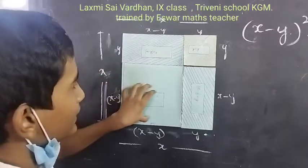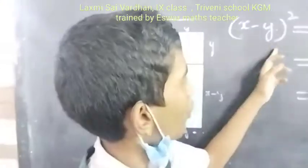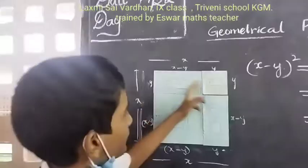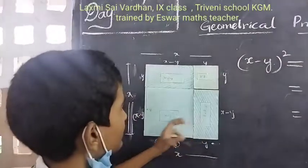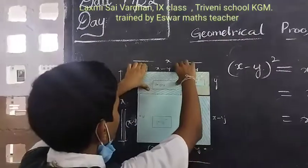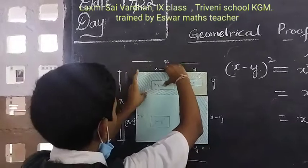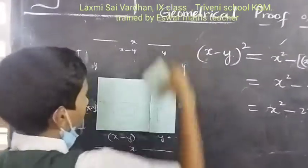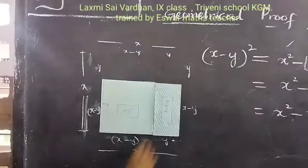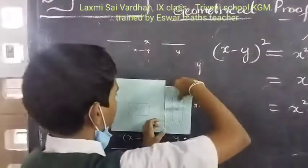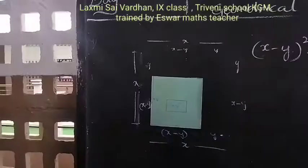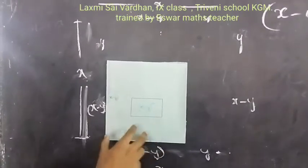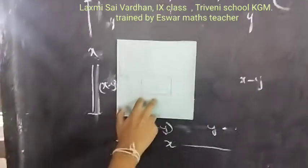To get this area, so X minus Y whole square as the area, we need to subtract all these areas. So, by removing, we get X minus Y whole square. This is the square. So, hence proof.